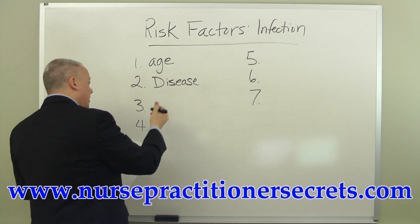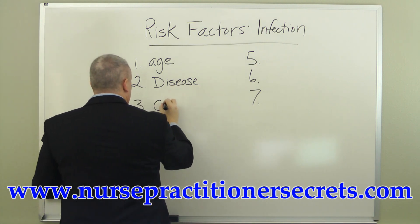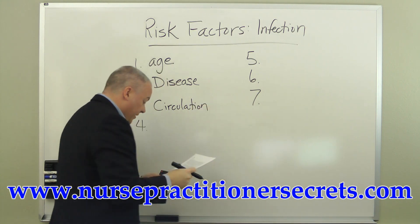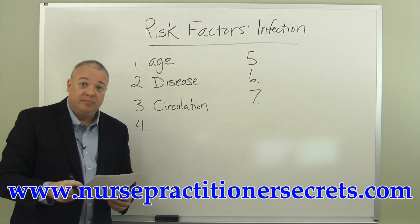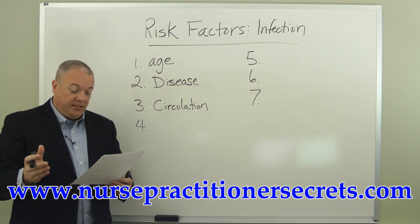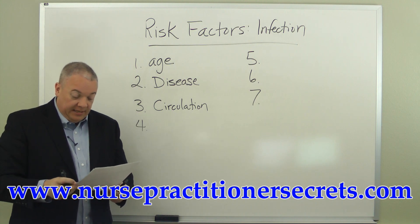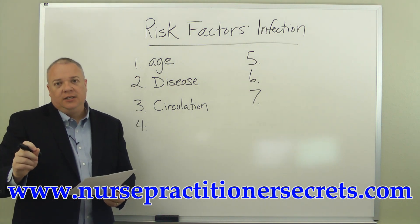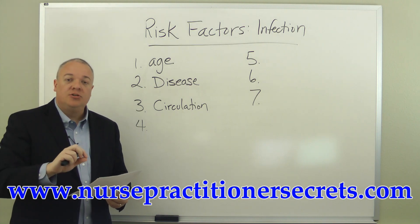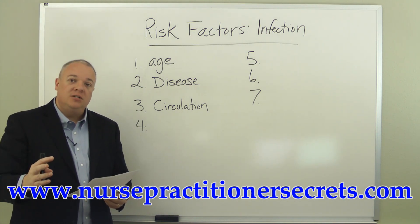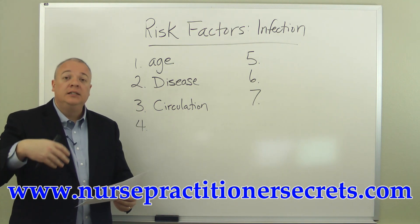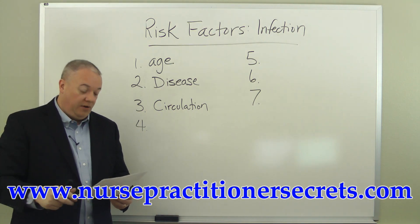The third thing we want to talk about is circulation. If there is circulatory impairment either due to wound or disease, decreasing the perfusion to a given area, then that increases the chance of infection. The blood is not flowing as it should to a particular region, and because of that decreased circulation, there's an increased risk of infection.